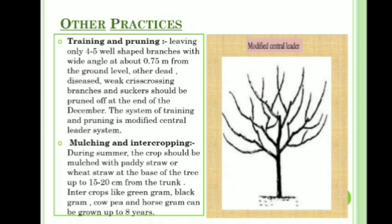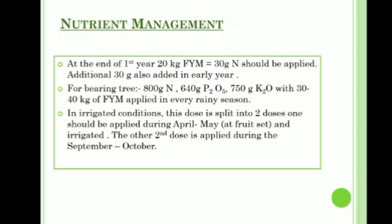Nutrient management: at the end of the first year, 20 kg of farm yard manure and 30 grams of nitrogen should be applied. An additional 30 grams of nitrogen is also added in early years. For bearing trees: 800 grams of nitrogen, 640 grams of P2O5, 750 grams of K2O with 30 to 40 kg of FYM applied every rainy season. In irrigated conditions, this dose is split into two — one applied during April to May when the fruit is set, and the second dose during September to October.